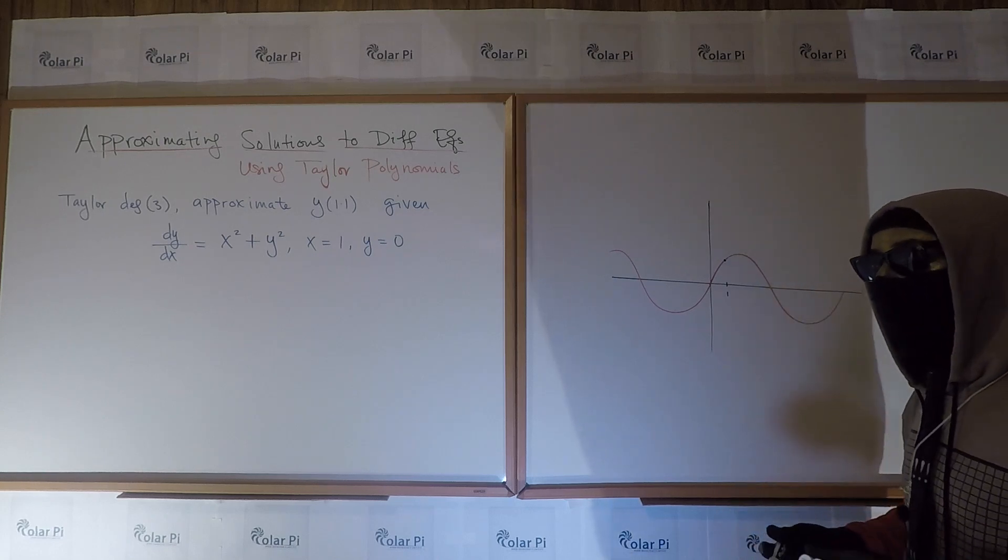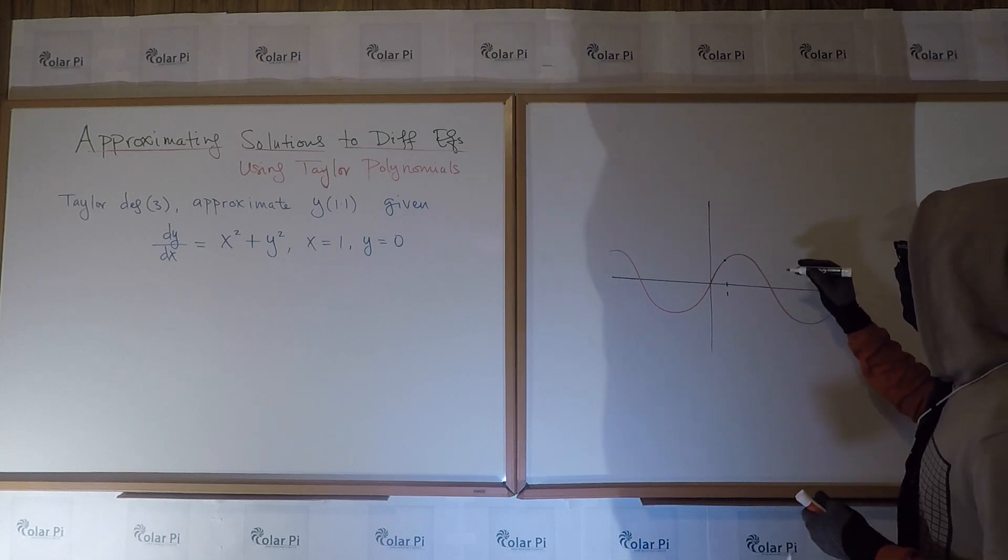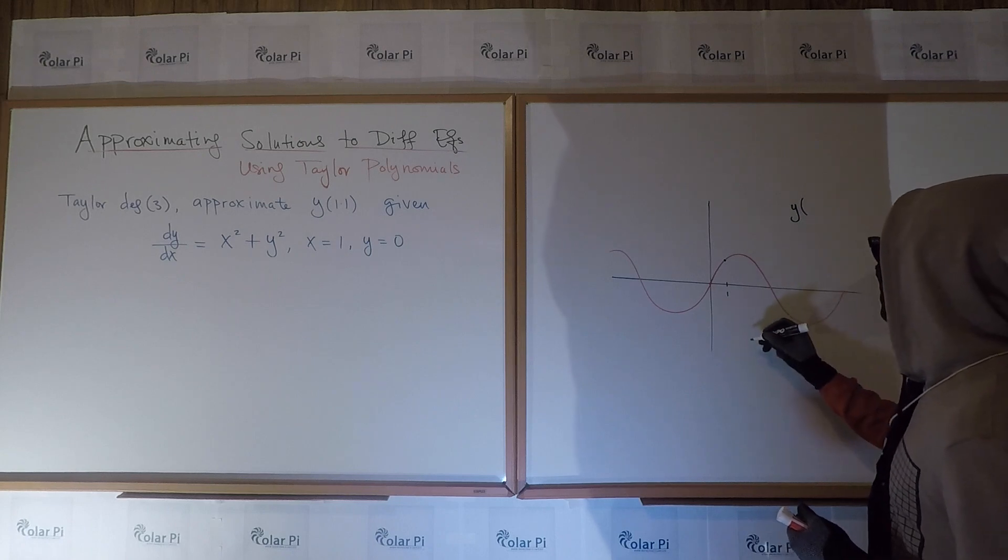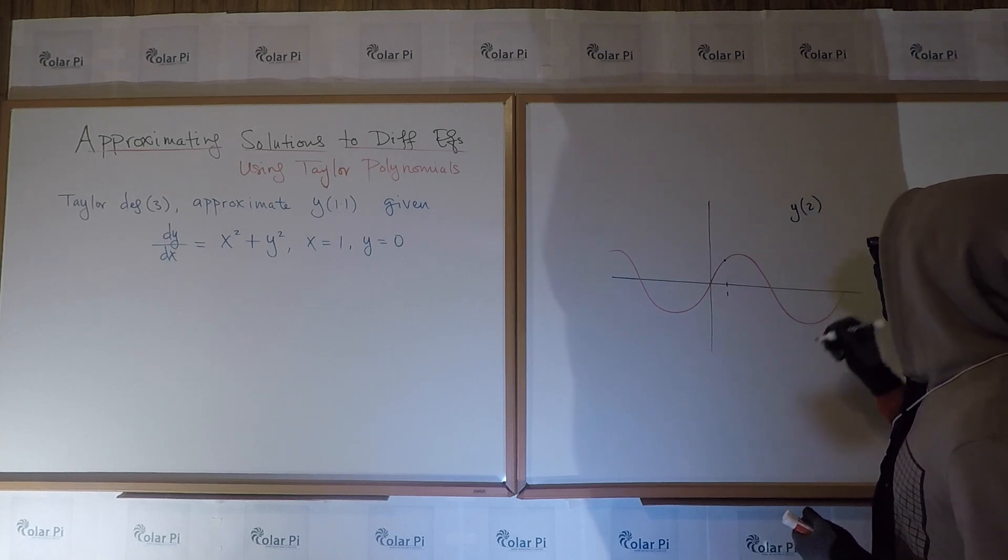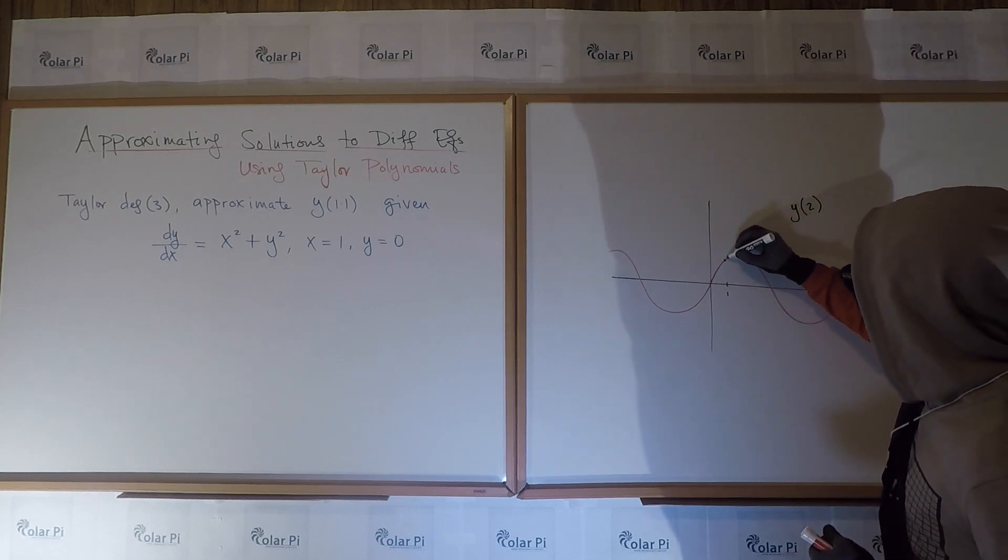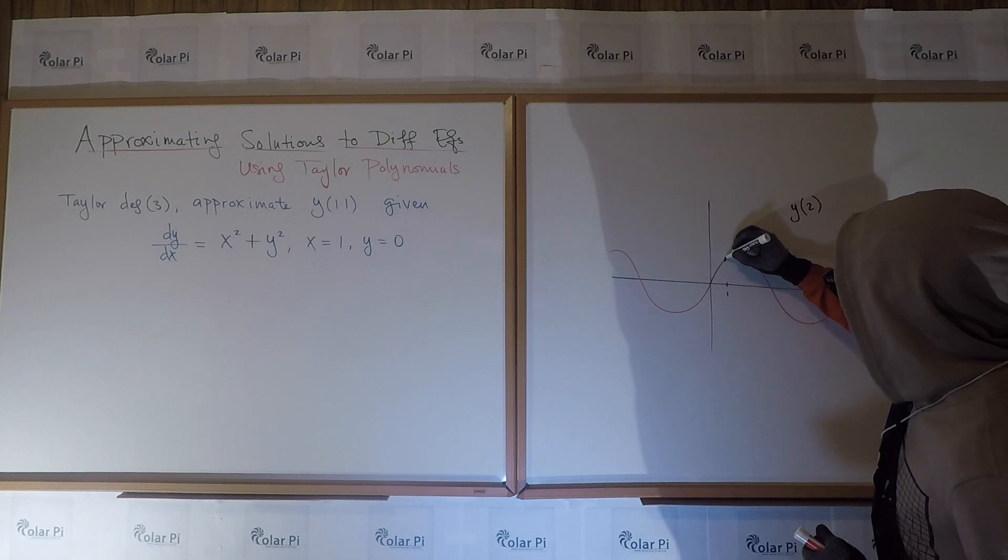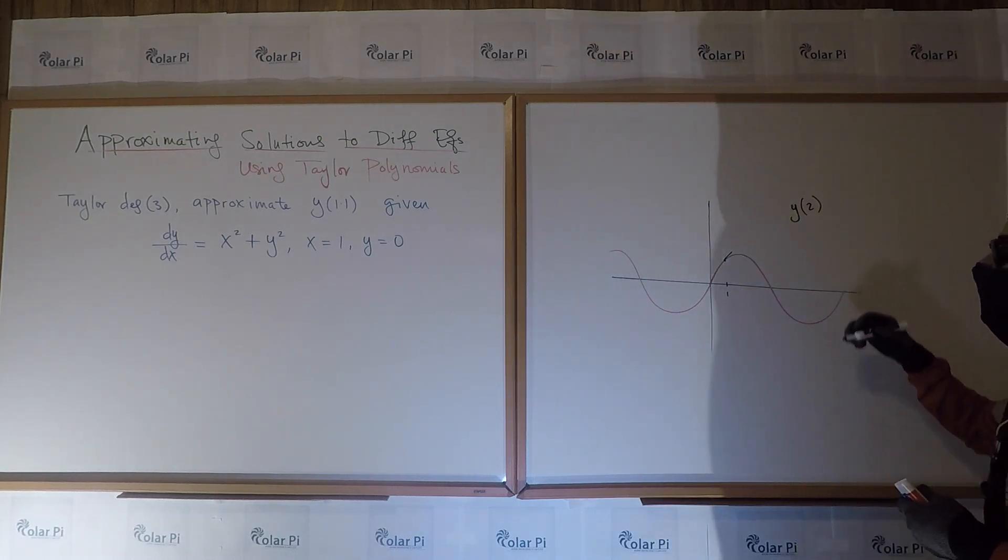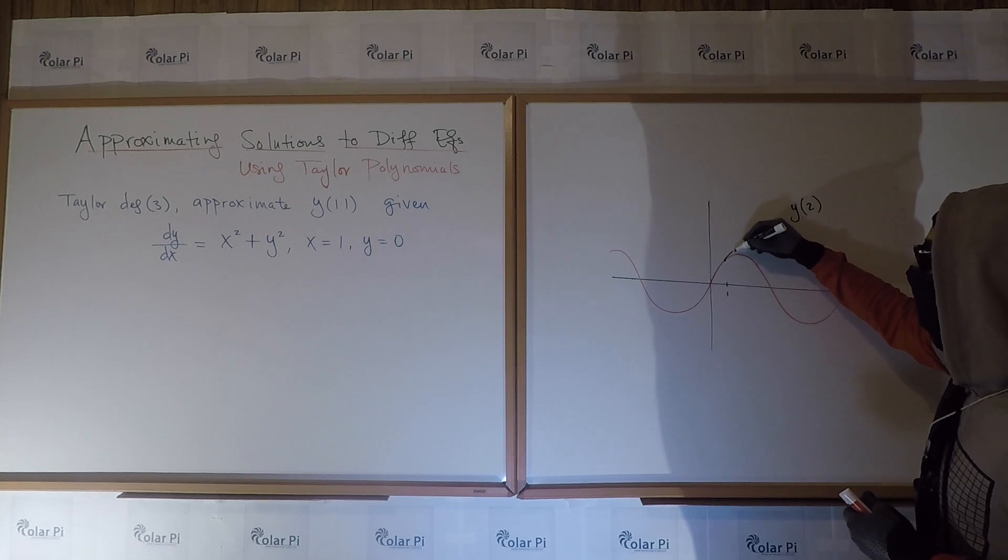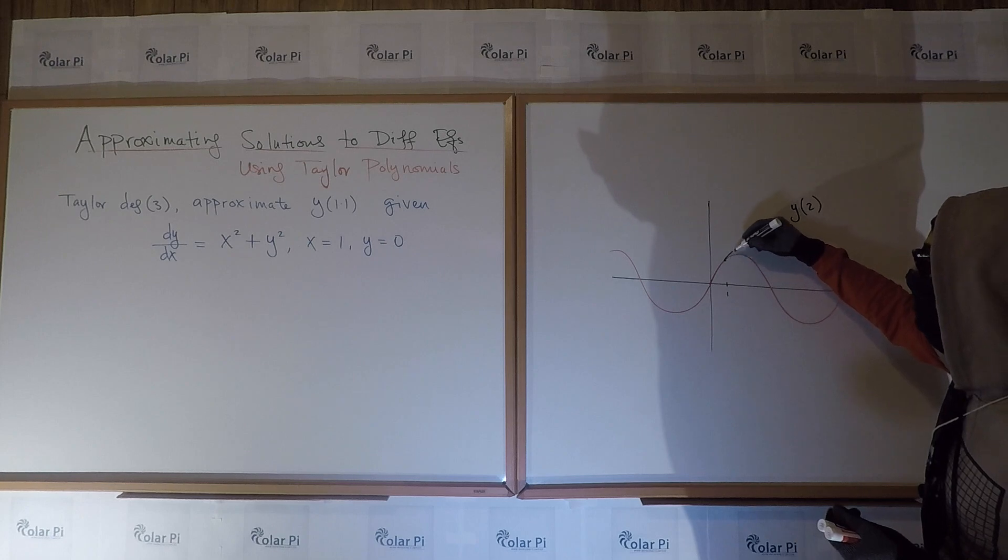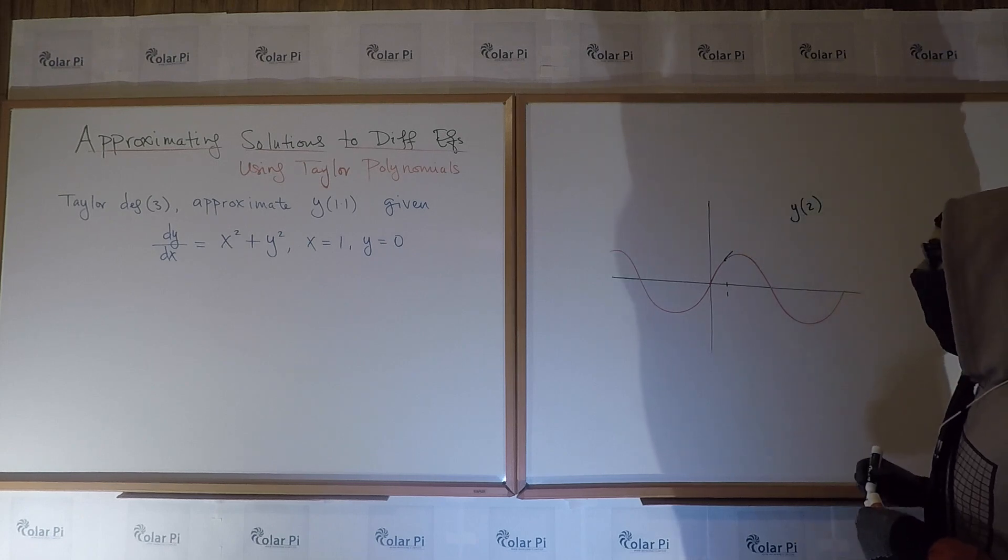So say you have a step size, and you're trying to estimate y of 2. So what you would do is you take little steps by using the slopes, which is the differential equation. And so move a particular step using the slope. Let's say that's that little step that you take first. And then now you have an x and a y here, and you use a differential equation to course correct, because if you follow this line, you're going to veer off to no man's land.